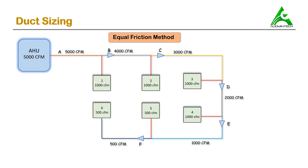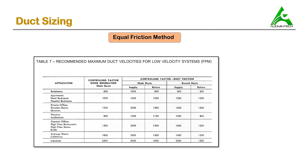We'll be designing the main duct using the equal friction method. The first step is to check that the maximum velocity of air flowing in any section does not exceed the recommended maximum velocity. As suggested by Carrier, since we are designing for a library, we look at the row for library and the column for supply duct, which intersect at 2000 FPM.